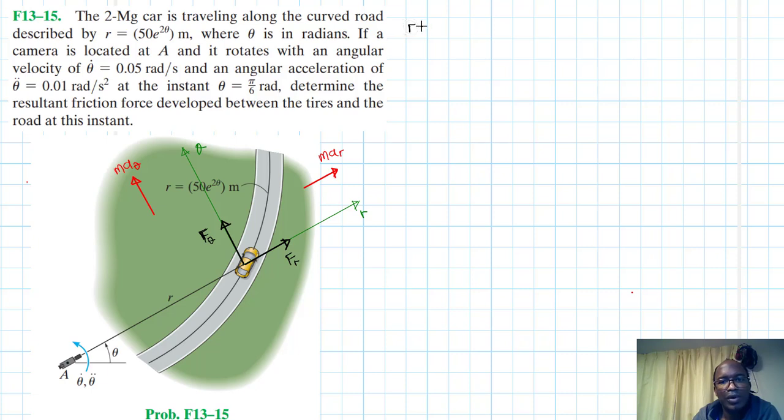So let's start with R. We do have R, which is equal to 50 E to the power 2 theta. Therefore, R dot, which is the derivative of R with respect to T, we are using a chain rule. So 2 comes down. So this becomes 2 by 50, it becomes 100, and then theta dot, and then E to the power 2 theta. All we are doing is dR with respect to dT.